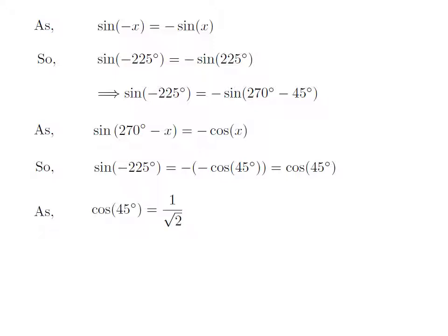We know the value of cosine of 45 degrees is equal to 1 upon square root of 2. So, we get the value of sine of minus 225 degrees is equal to 1 upon square root of 2.